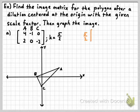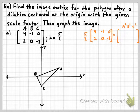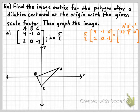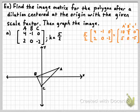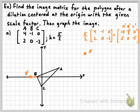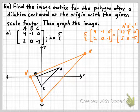We're going to multiply 5/2 by the pre-image matrix to get the image matrix A', B', C'. So: 5/2 × 4 = 10, 5/2 × (−1) = −5/2 (or −2.5), 5/2 × 0 = 0, then 5/2 × 2 = 5, 0, and −5. Graphing those image points: A' is at (10, 5), B' is at (−2.5, 0), and C' is at (0, −5). That's our dilation — it happened to be an enlargement because the scale factor was greater than 1, specifically 2.5.